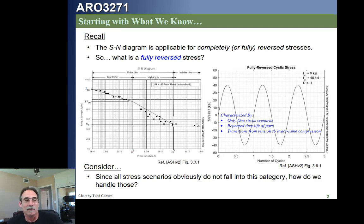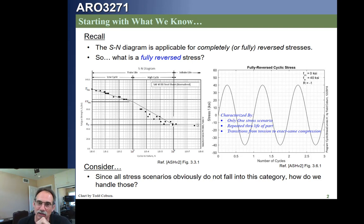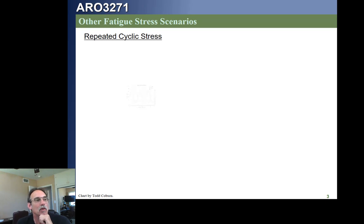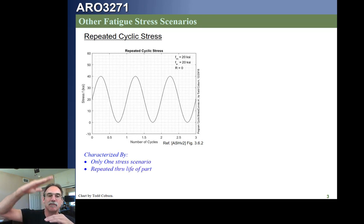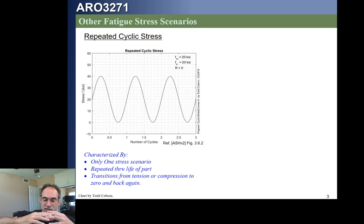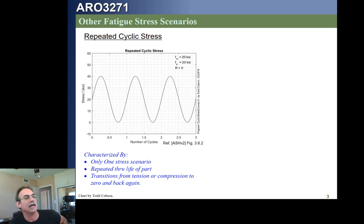Unfortunately, many stresses don't fall into this category of moving from negative to positive and over and over. They have other characteristics. For example, we might have what we call a repeated load where we're going from zero to some value and back to zero. A fully reversed stress goes to the negative and then to the positive. A repeated stress goes from zero to something and back to zero — it never goes negative. It's just repeating over and over.